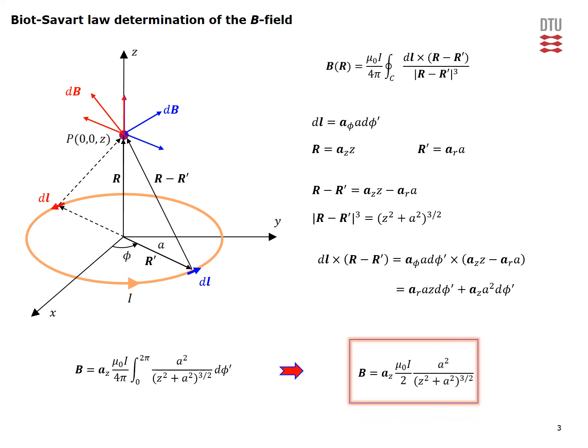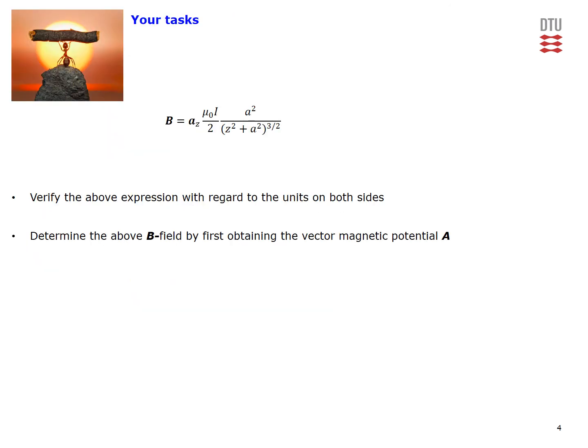When you do the integral you finally arrive at the final result for the B field for this circular conductor of radius a which carries current I. This is the field on the axis of our current loop. We have essentially solved the problem. We would like you to verify the above expression with regard to the units on both sides and also to figure out this field by first obtaining the vector magnetic potential A and taking the curl of this expression. Thank you very much for your attention.